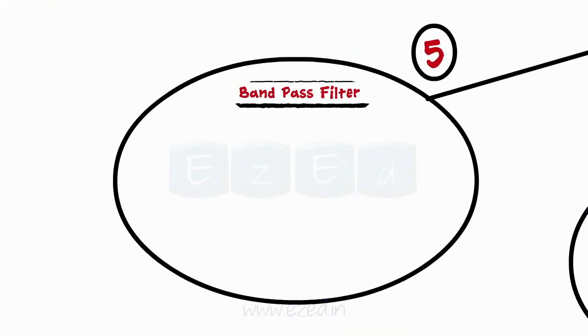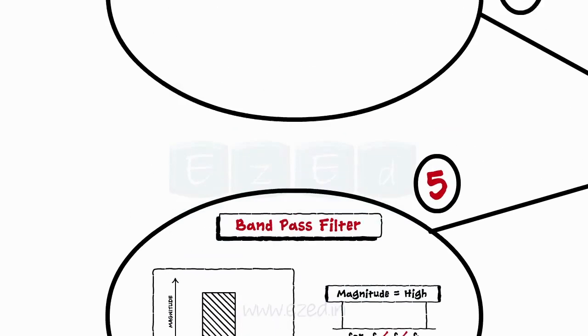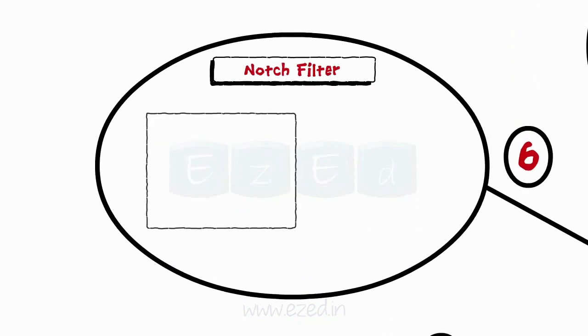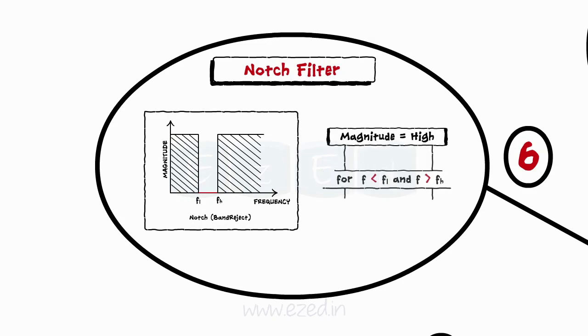Next filter is band pass filter which allows only certain set of frequencies between lower and higher cutoff frequencies. The last filter is notch filter or band reject filter which rejects a particular band of frequencies and passes all other frequencies.